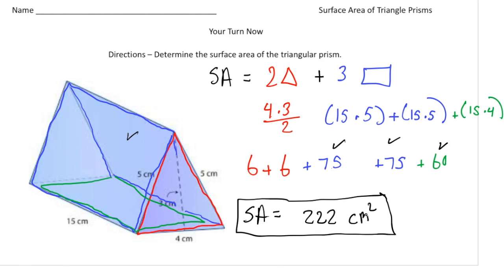The big thing to remember is it's the area of twice the triangles plus the area of the three different rectangles that you add together. How'd you do?